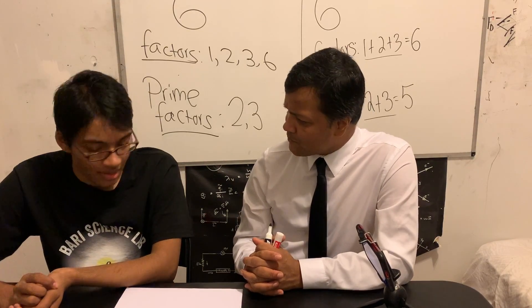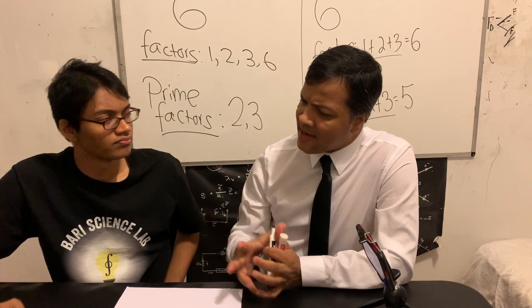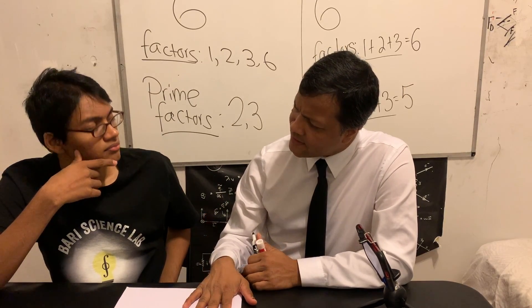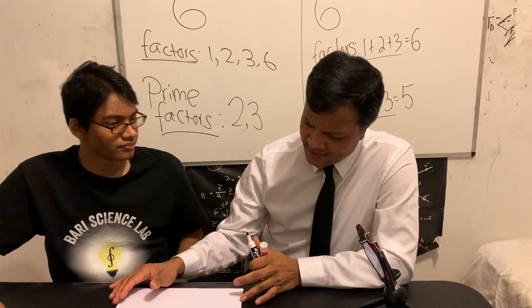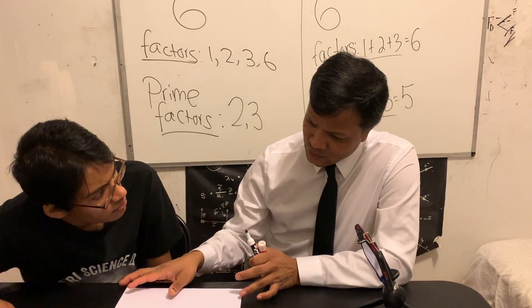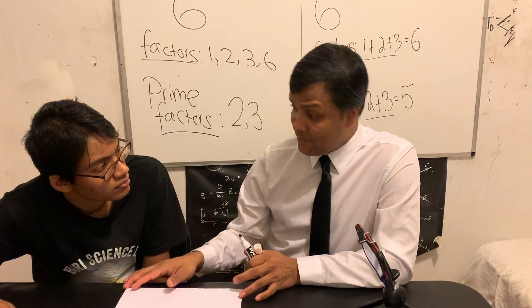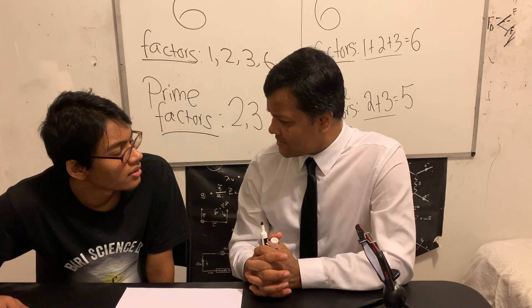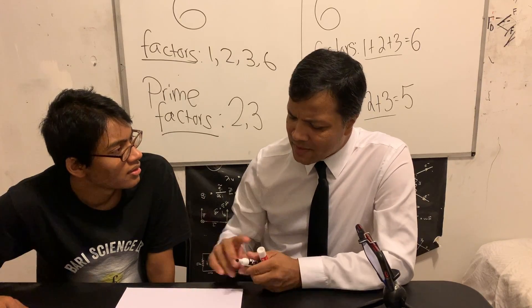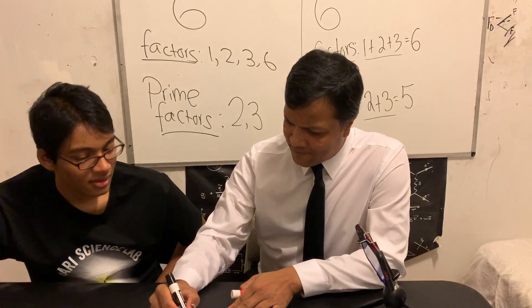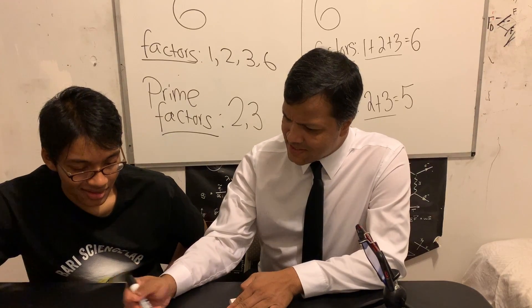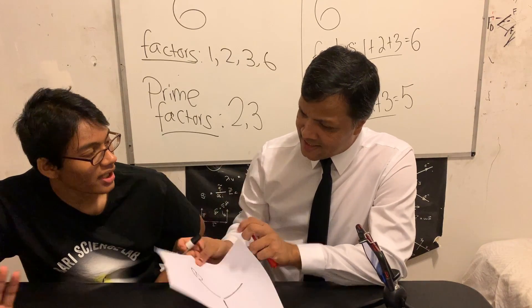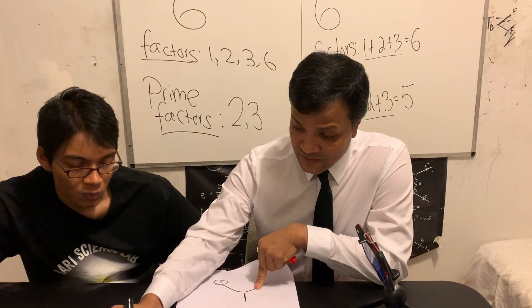A prime number is a number that has exactly two factors: one and the number itself. Now, can you give me an example of a prime number between zero and twenty? What about one? One is not a prime number — it only has one factor, itself, so it does not satisfy the condition of having exactly two factors.